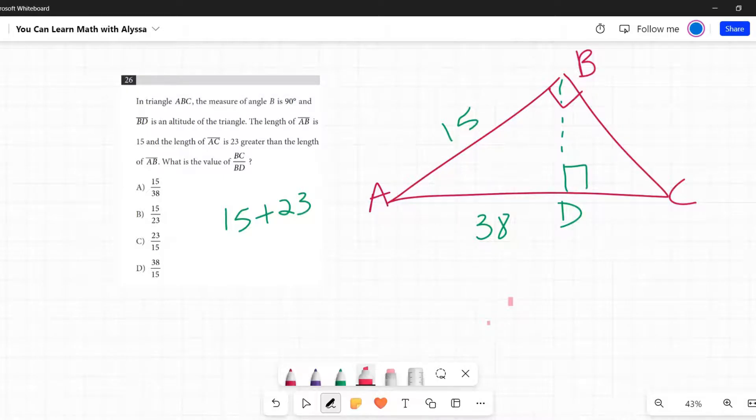But also over here, BDC has angle C as one of its three angles, and BAC has angle C as one of its three angles. So BDC and ABC are also similar.